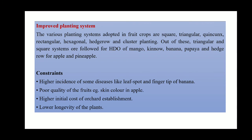Improved planting systems: the various planting systems adopted in fruit crops are square, triangular, quincunx, rectangular, hexagonal, hedge row, and cluster planting. Out of these, triangular and square systems are followed for HDP of mango; quincunx for banana and papaya; and hedge row for apple and pineapple.